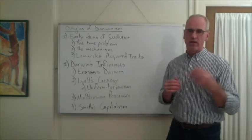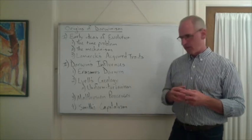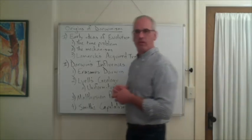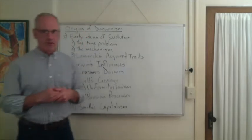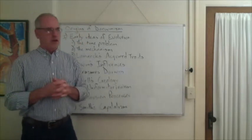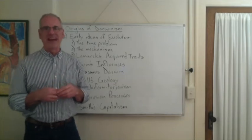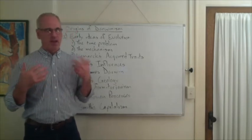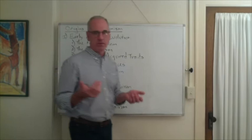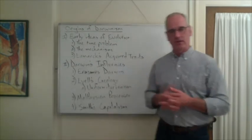One thinker in particular, a scientist, the Comte de Buffon in France, was a really careful comparative anatomist. He came very close to suggesting that evolution had happened, that human beings probably evolved from some common ancestor with apes.